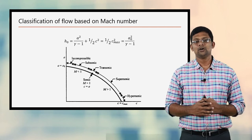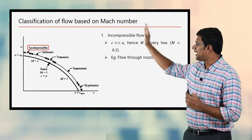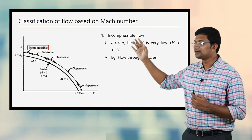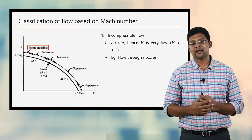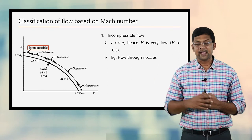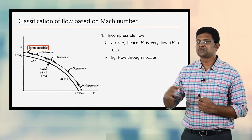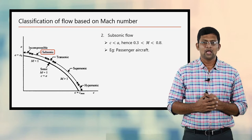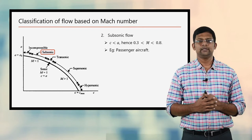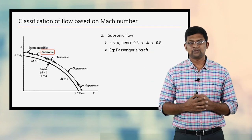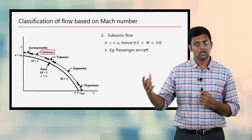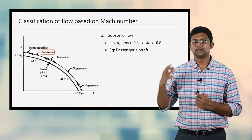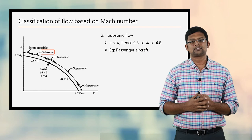Now here we can see five regions. Let us start with incompressible flow. In incompressible flow, that is the region closer to the A axis, the velocity of the object or fluid is much lesser than the velocity of sound A. As a result, the Mach number will be a smaller value, somewhat lesser than 0.3. An example is flow of liquids through nozzles. The next region is the subsonic region, where the fluid velocity is somewhat comparable to the velocity of sound, and hence the Mach number range is between 0.3 and 0.8. The example is passenger aircraft, which fly with speeds ranging between 800 and 1000 km/h, while the velocity of sound is higher than 1200 km/h, so the Mach number will be lesser than 1.